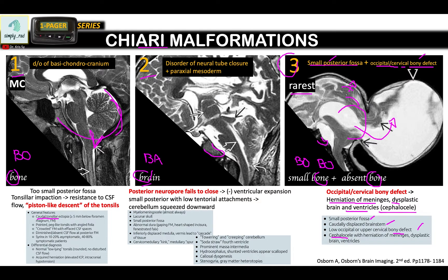'Ba' is for brain, meaning the root cause of the imaging findings we see in Chiari 2 is due to a brain problem, which is neural tube closure. That's why you almost always have your myelomeningocele and the other associated findings. And then for Chiari 3, the root cause is a small posterior fossa combined with a bony defect posteriorly — that's why the brain herniates, and that's what characterizes Chiari 3, which is your cephalocele.